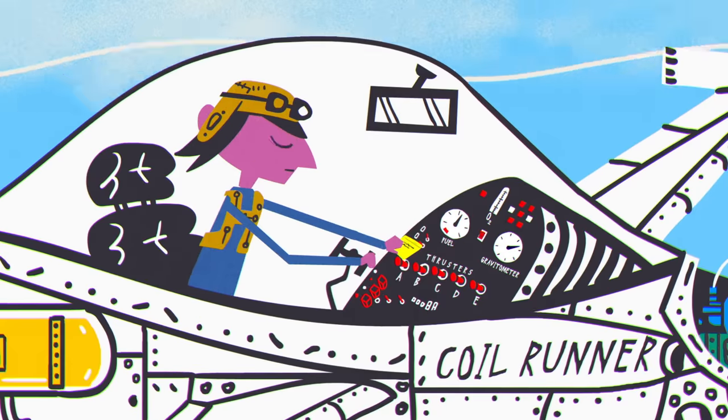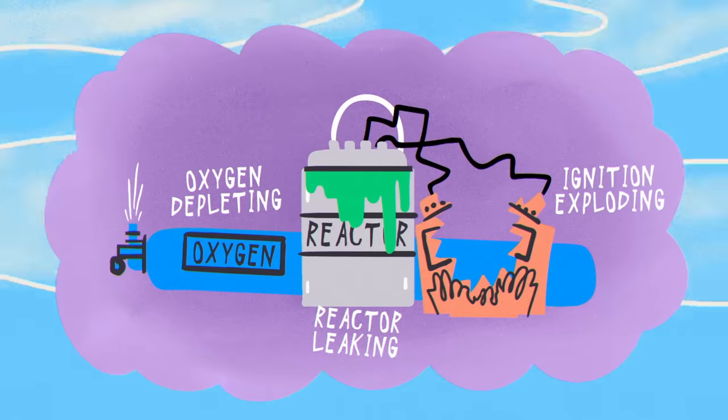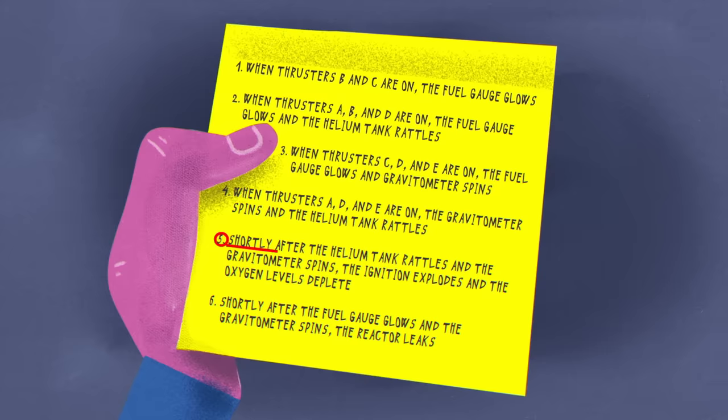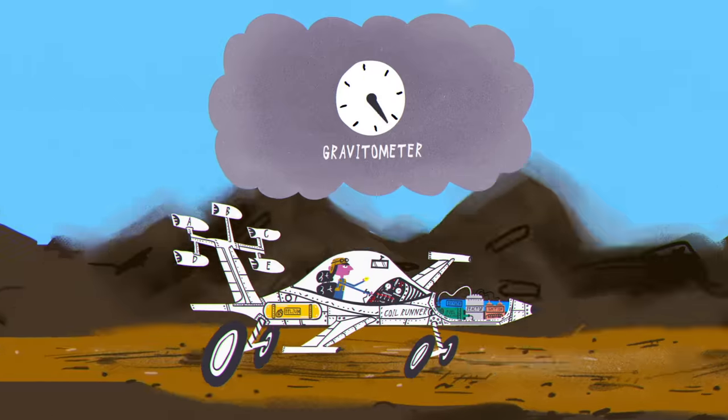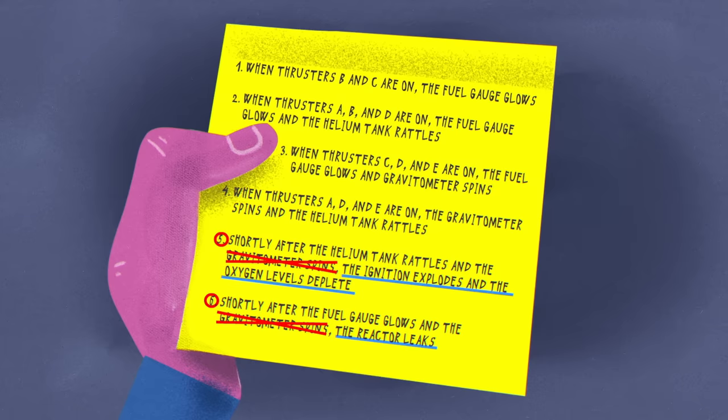With that in mind, one way we can start is to work backwards from the three defects that could knock you out of the race. So let's look at Slate's last two notes, since they give direct information about those. The gravitometer spins in both cases, but the results are different. That means the spinning gravitometer can't be the cause of any particular malfunction. If it were, the same thing would happen each time. So we can conclude that a glowing fuel gauge makes the reactor leak, while a rattling helium tank makes the ignition explode and depletes the oxygen levels.